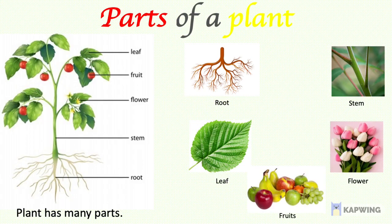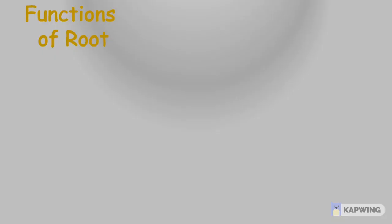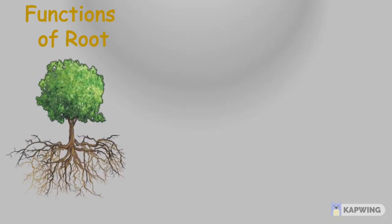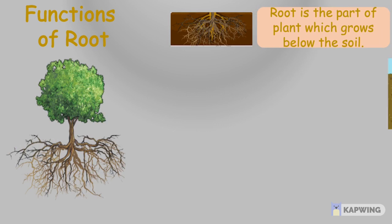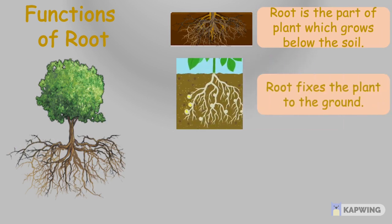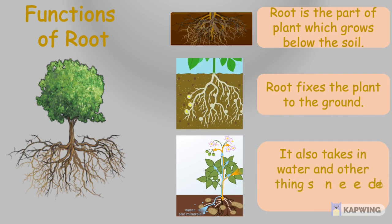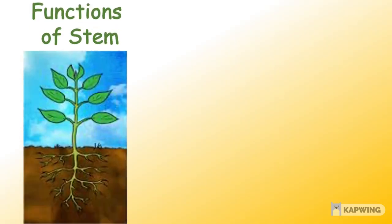Root, stem, leaf, flower, and fruits are parts of a plant. So what are the functions of the root? The root is the part of the plant which grows below the soil. Root fixes the plant to the ground and also takes in water and other things needed by the plant.